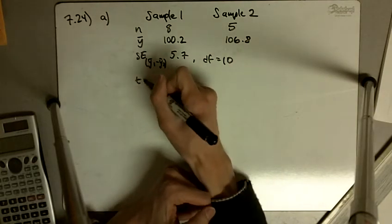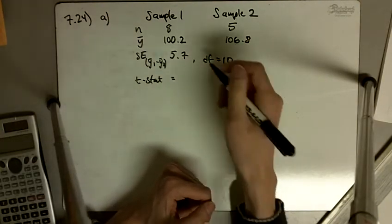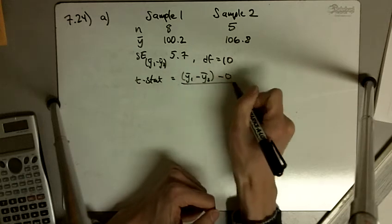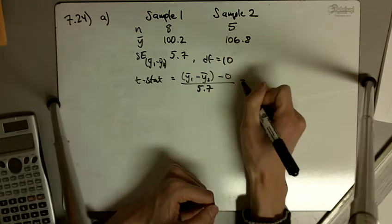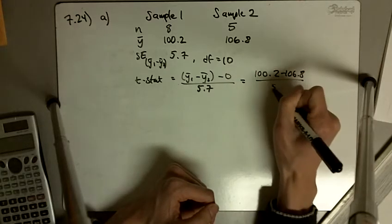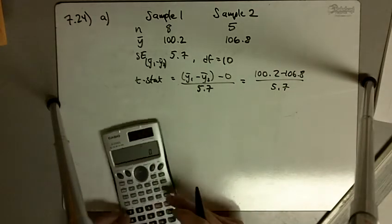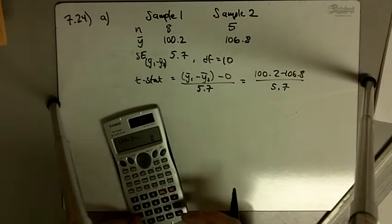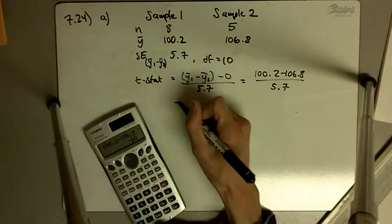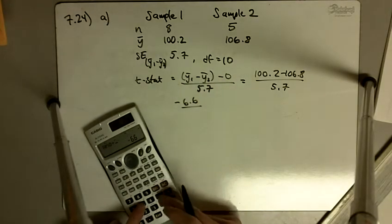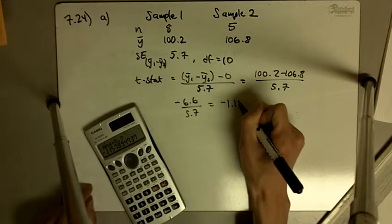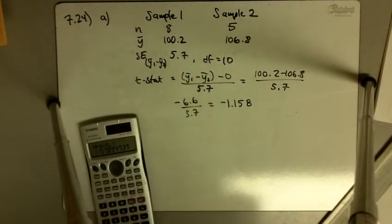The t statistic is going to be y bar 1 minus y bar 2 minus 0 over the standard error 5.7. So in this case we have 100.2 minus 106.8 divided by 5.7.